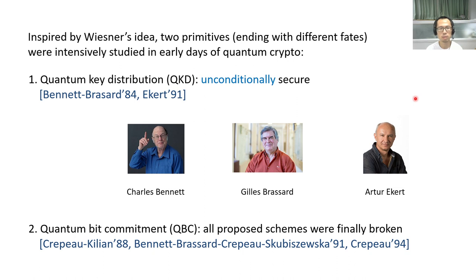The first primitive is quantum key distribution. Bennett and Brassard, and independently Ekert, have proposed two slightly different protocols. Both of them can be shown unconditionally secure.